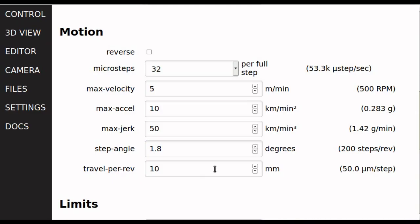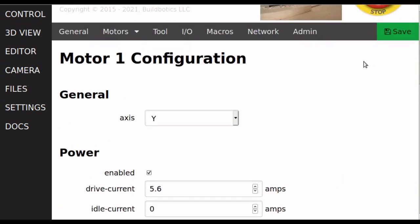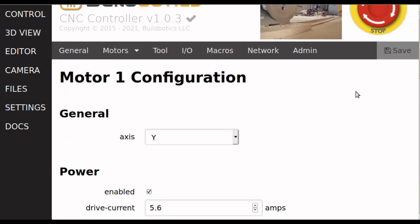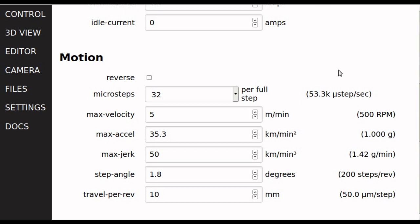As a starting point, I like to set the max acceleration to 35.3 kilometers per minute cubed. This is 1g. At 1g, the axis will accelerate from 0 to 5 meters per minute in about 9 milliseconds if you ignore jerk.